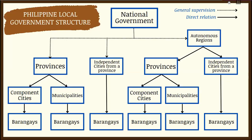The national government through the President has general supervision over provinces, independent cities from provinces, and autonomous regions. Provinces have direct supervision over component cities and barangays. Independent cities from provinces also directly supervise barangays. Autonomous regions — BARMM and CAR — supervise their provinces and independent cities, which in turn supervise component cities down to barangays.